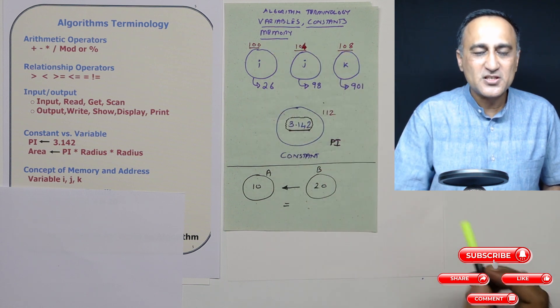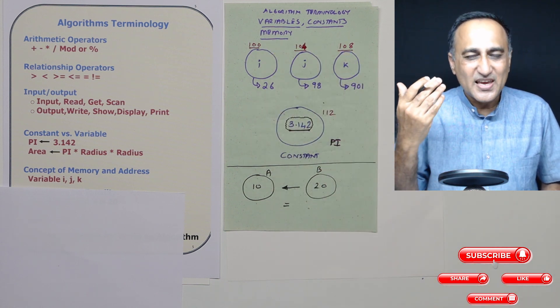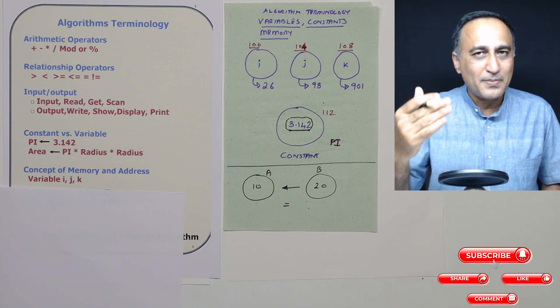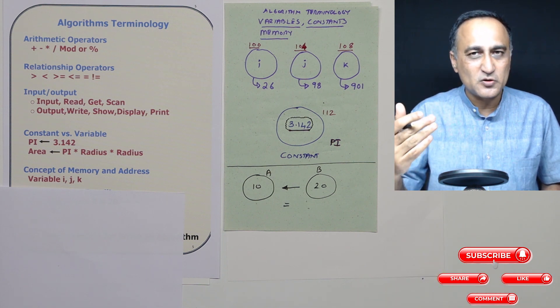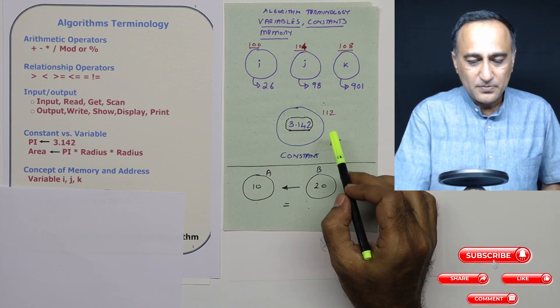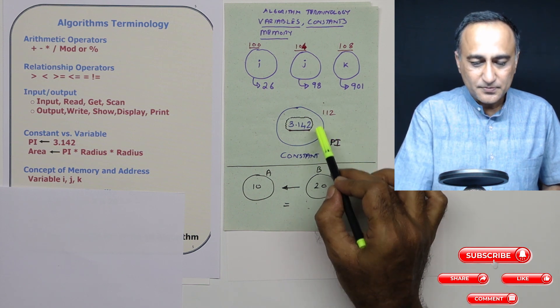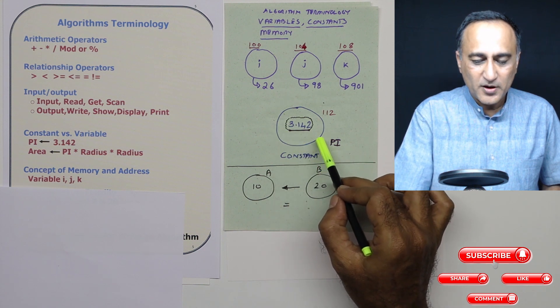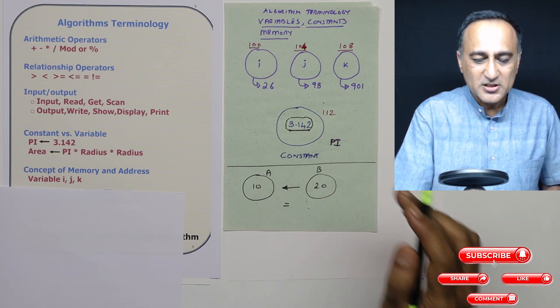Mind you, all these memory locations in red are just example and random numbers. The compiler or operating system chooses what memory location to allocate to your program. So this constant pi 3.142 has a memory location 112.